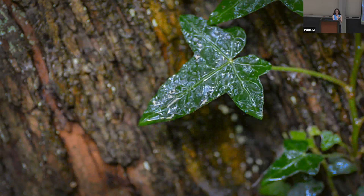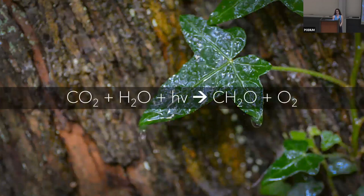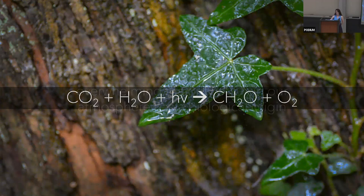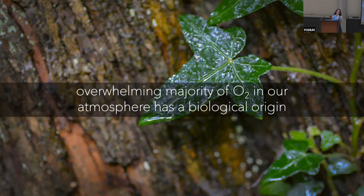Oxygen, as I'm sure you're well aware, is the best studied and best known biosignature of our planet. It's produced by the dominant metabolism of our planet, oxygenic photosynthesis. Oxygenic photosynthesis, we think, evolved quite early on in our planet's history, even before oxygen levels rose to appreciable abundances in our atmosphere. The overwhelming majority of oxygen in our atmosphere is biological. There are small photochemical sources of oxygen, but they are vastly outweighed by biological production.